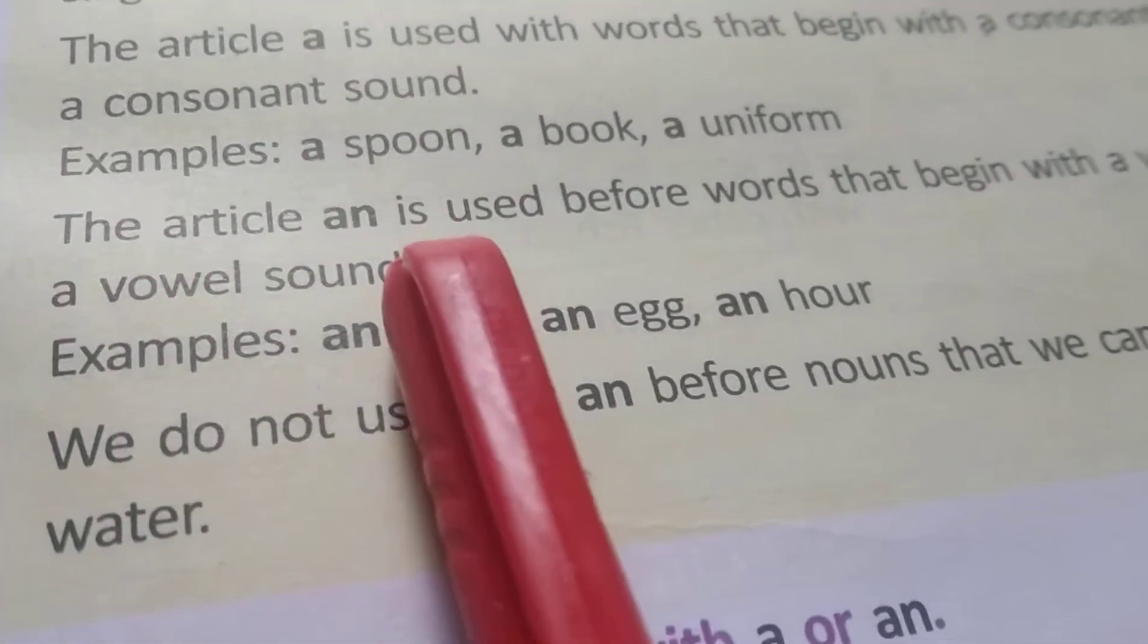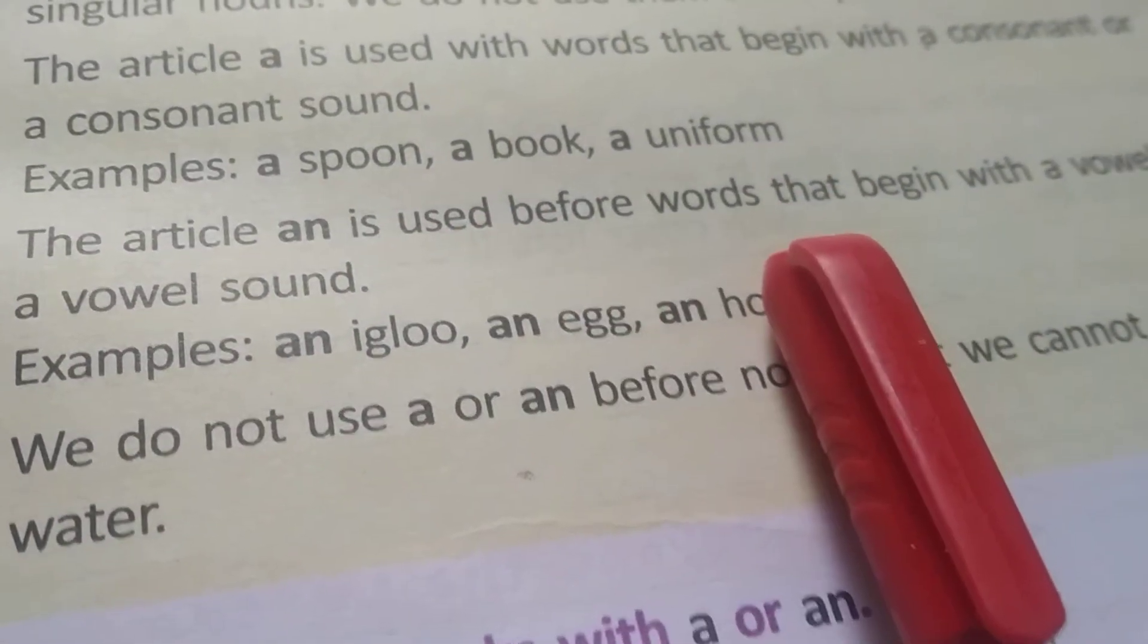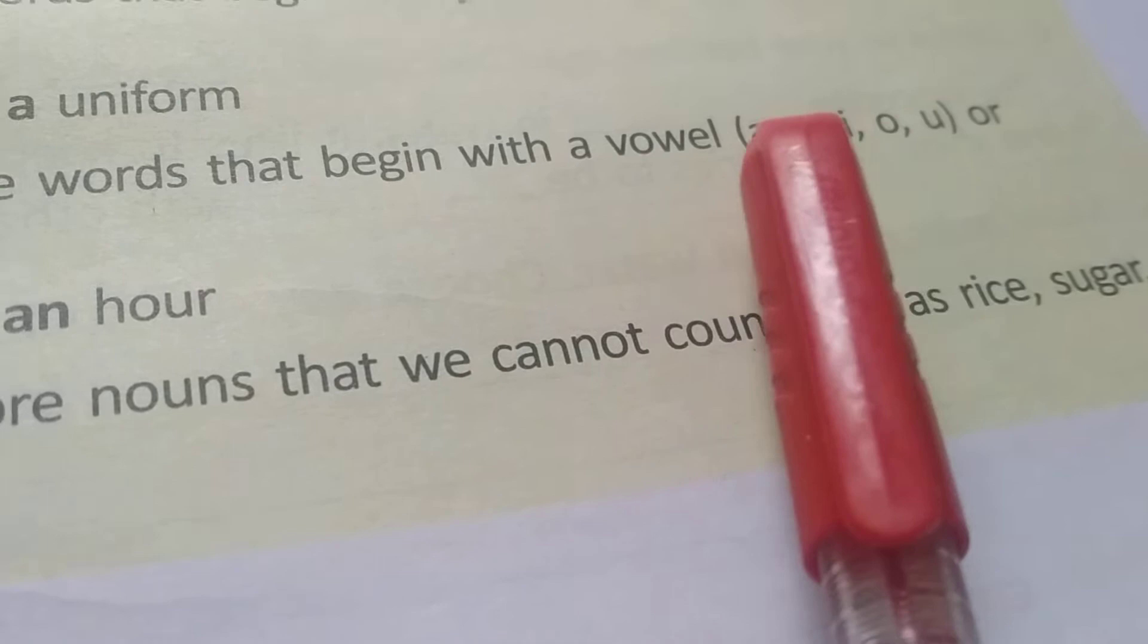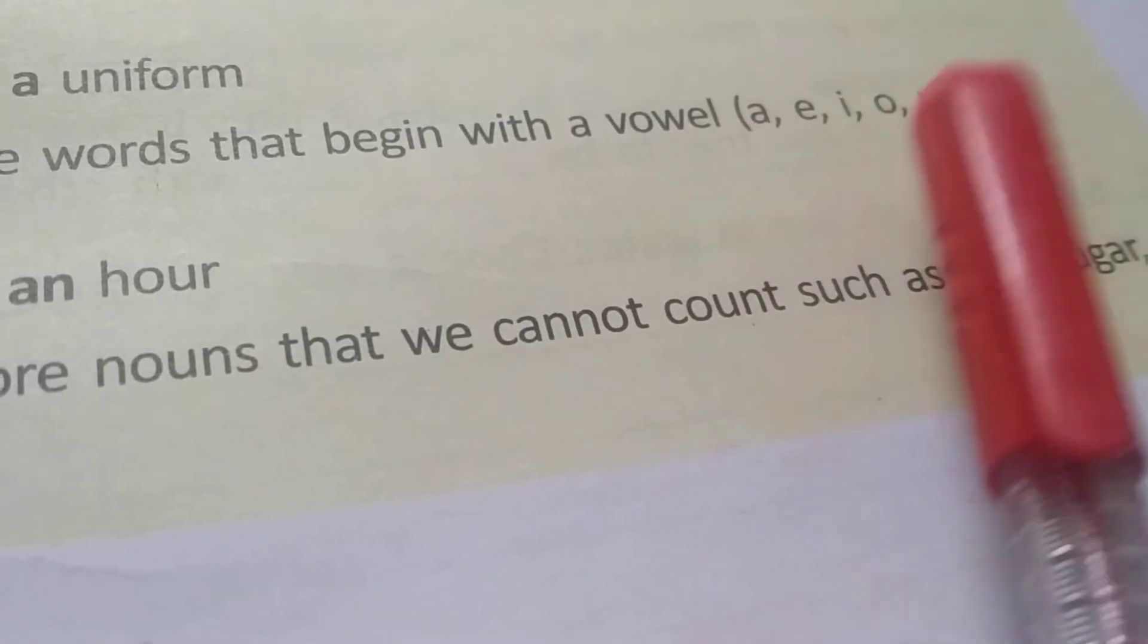The article an is used before words that begin with a vowel. See here. A vowel: A, E, I, O, U. A, E, I, O, U.